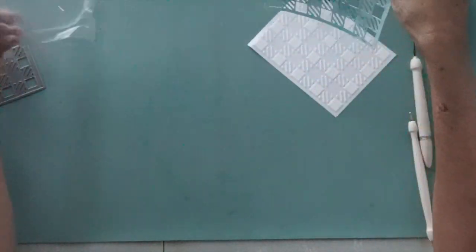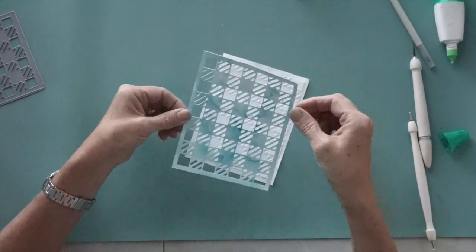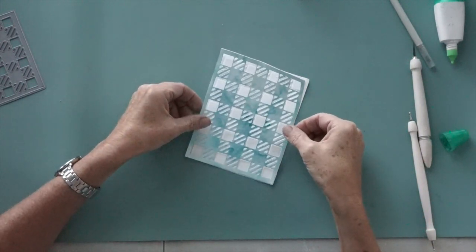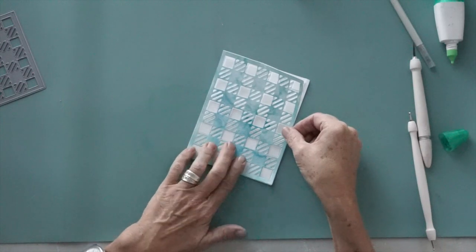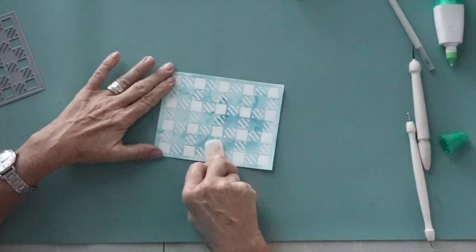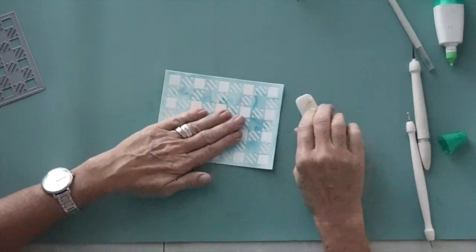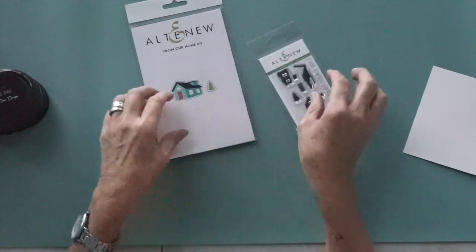For adhering that large positive piece of the die you could totally just use some spray adhesive or whatever you prefer that's quick and easy. I didn't have mine handy at the moment and my Tombow glue was still handy so that's what I ended up using. Then I used my bone folder to burnish it well and make sure it was all well adhered.